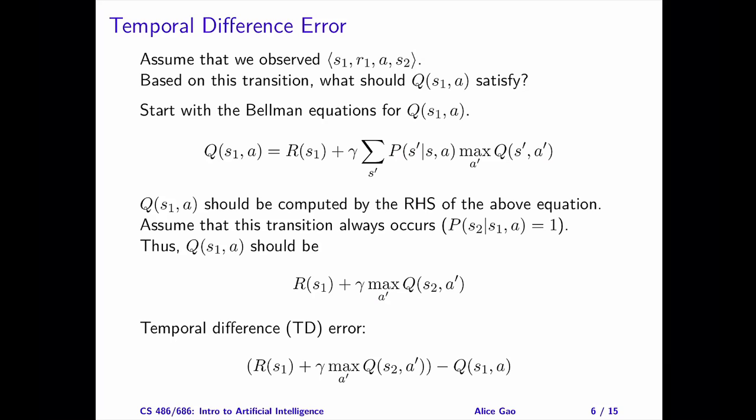Assume that we have received an experience. Starting from state S1, we received an immediate reward of R1. We took the action A and reached state S2. Based on this observed transition, how should we update the Q value, Q(S1, A)?